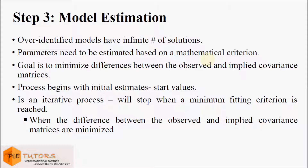The most widely used estimation procedure in SEM is maximum likelihood estimation, which is a full information method — that is, all the parameters are calculated at once. The estimation process is iterative and begins with some initial estimates. It will stop when the difference between the observed and implied covariance matrix is minimized.